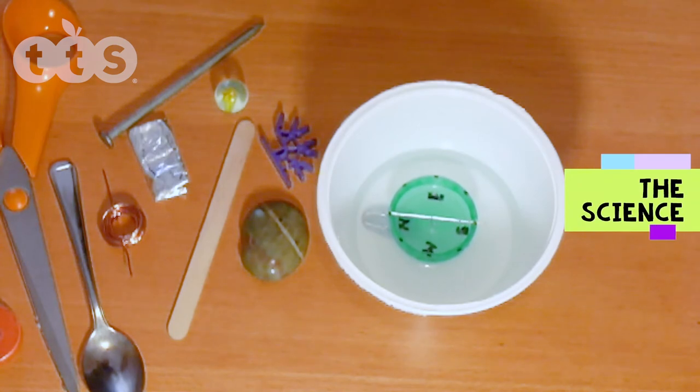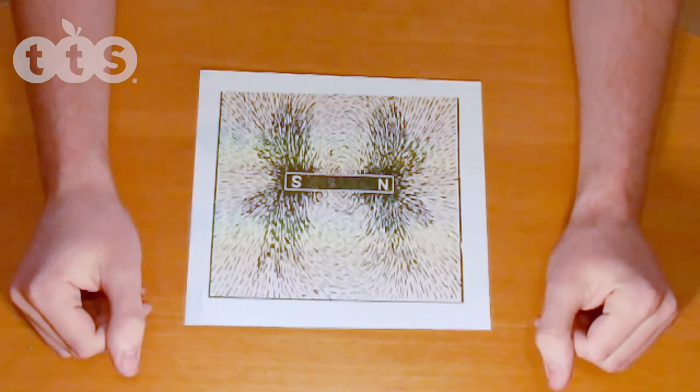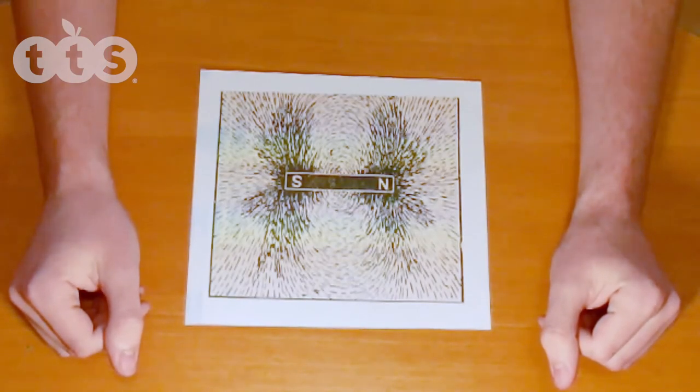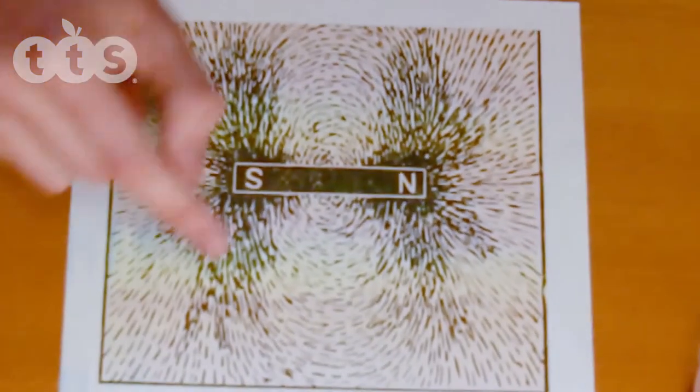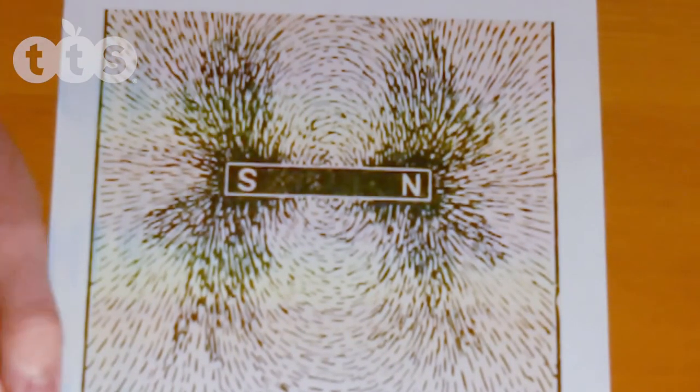Now my son who is a physics student is going to tell you about the science behind the project. A magnet can be used to attract magnetic materials. It also has a magnetic field around it. This picture shows a bar magnet with two poles north and south, making it a dipolar magnet.